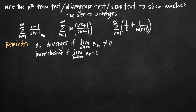In this video we're going to be doing three separate examples. I've written three different infinite sums and we're going to be using the divergence test to test each one for divergence. I like to call it the divergence test because it helps remind me that this test is really only good for talking about divergence — it tells us nothing about whether or not a series converges.